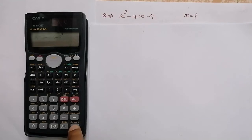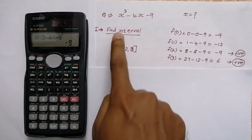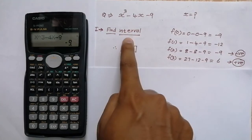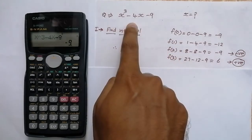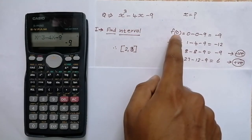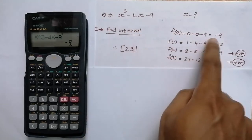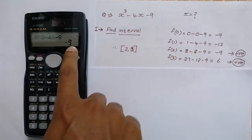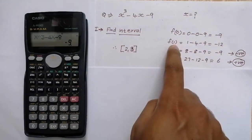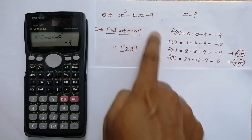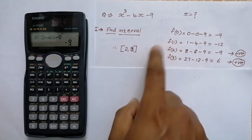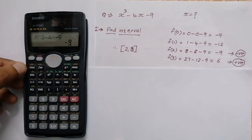Step 1 is to find the interval. For finding the interval we need to put X equal to 0, 1, 2, and 3 into this equation. When you put X equal to 0, we get minus 9. Now we need to put X equal to 1, that is 1 cube minus 4 into 1 minus 9.